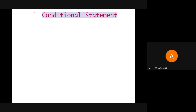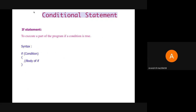Next is conditional statement. The first conditional statement is the simple if statement. Whenever we want to execute a particular piece of code if a condition is satisfied, we use the if statement. The syntax is: we mention the keyword if, within parenthesis we mention the condition, and below that we write a block of statements. As shown in the flowchart, first the condition is checked. If the condition is true, then the body of if gets executed. If it's false, then the body of if is skipped.